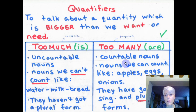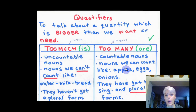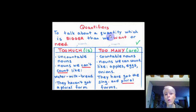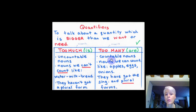Countable nouns are nouns we can count. I can count apples, I can count eggs, and I can count onions. They have got the singular form but also the plural form. When we want to say a quantity is bigger than we need, we use the plural form. With the plural form, the verb we use is 'are': there are too many apples, there are too many eggs, there are too many onions.